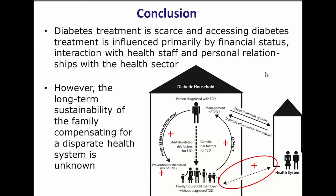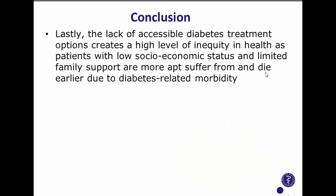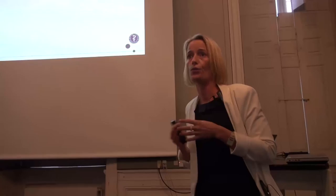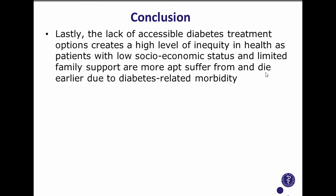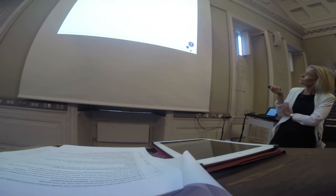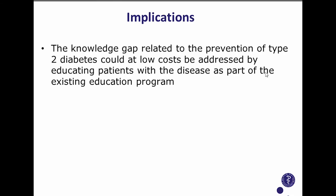We don't know whether family support in accessing healthcare is sustainable long-term or whether families will eventually stop providing it. Also, due to our inclusion criteria, we can only comment on patients who live in a household with a family — we excluded patients with no household support. We don't know how those patients are doing, but we could speculate that they are more likely to suffer and die earlier from diabetes-related morbidity because they lack this backup.